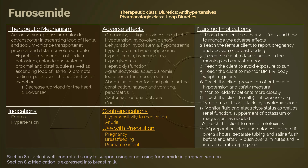Discard IV solutions if past 24 hours. Do not mix furosemide with other solutions; use a separate tubing set and always flush the IV catheter with saline before and after administration. Administering furosemide too fast via IV increases the risk of ototoxicity, so monitor the rate: administer over one to two minutes for IV push, and at a rate no faster than 4 mg per minute for IV infusion.